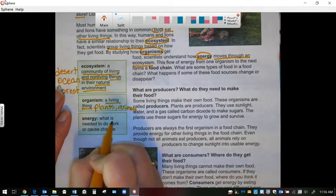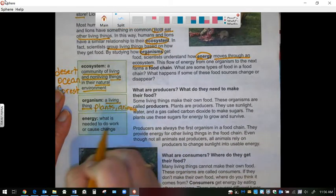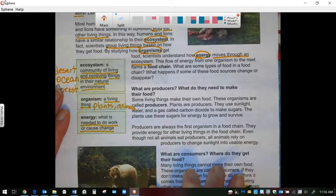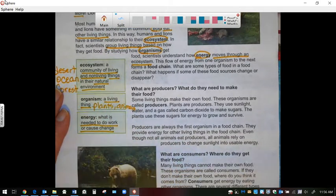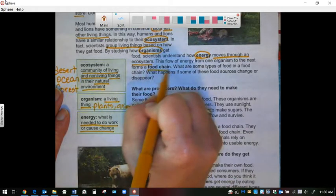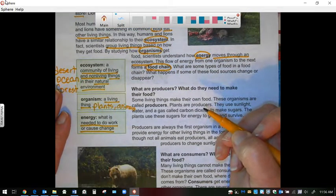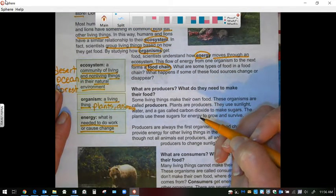Energy is what is needed to do work or to cause change. This flow of energy from one organism to the next is called a food chain. What are some types of food in a food chain? What happens if some of these food sources change or disappear?